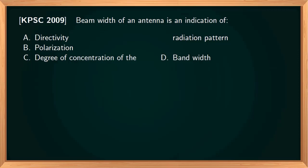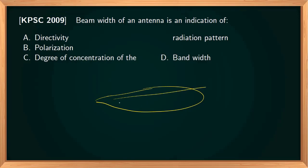The beam width of an antenna is an indication of directivity. Directivity means the focusing of the radiation pattern. The half-power beam width is measured between the two half-power points on the radiation pattern and is expressed in angle theta. As beam width decreases, directivity increases, so beam width is closely related to directivity.